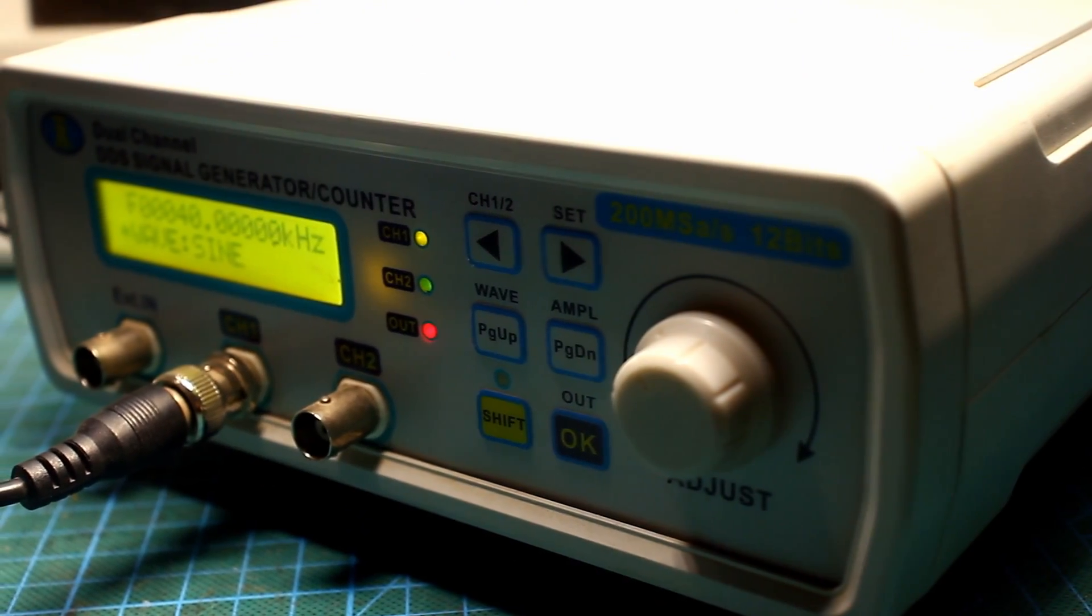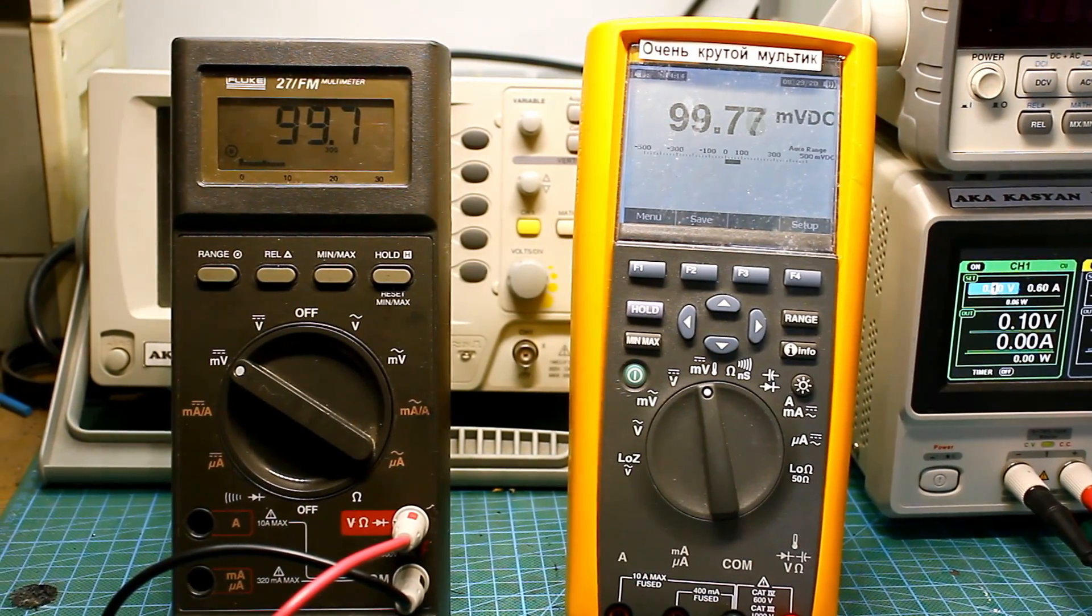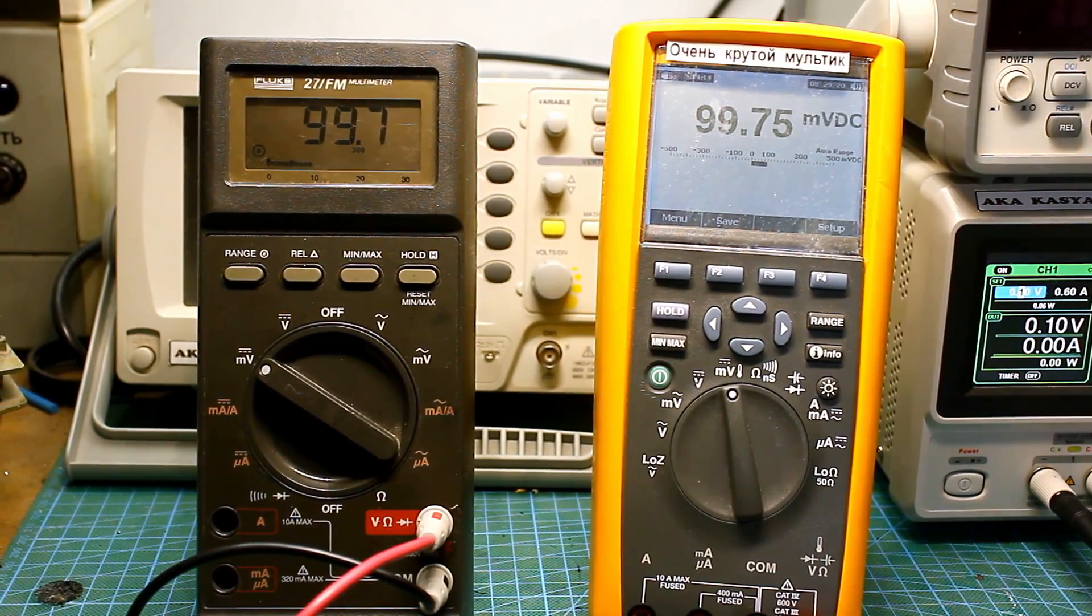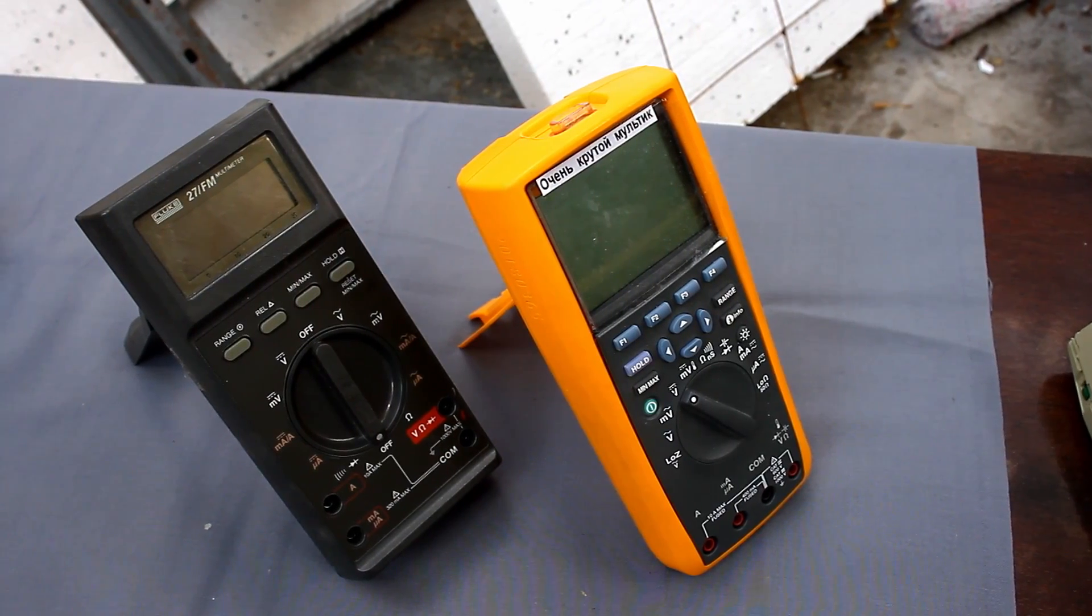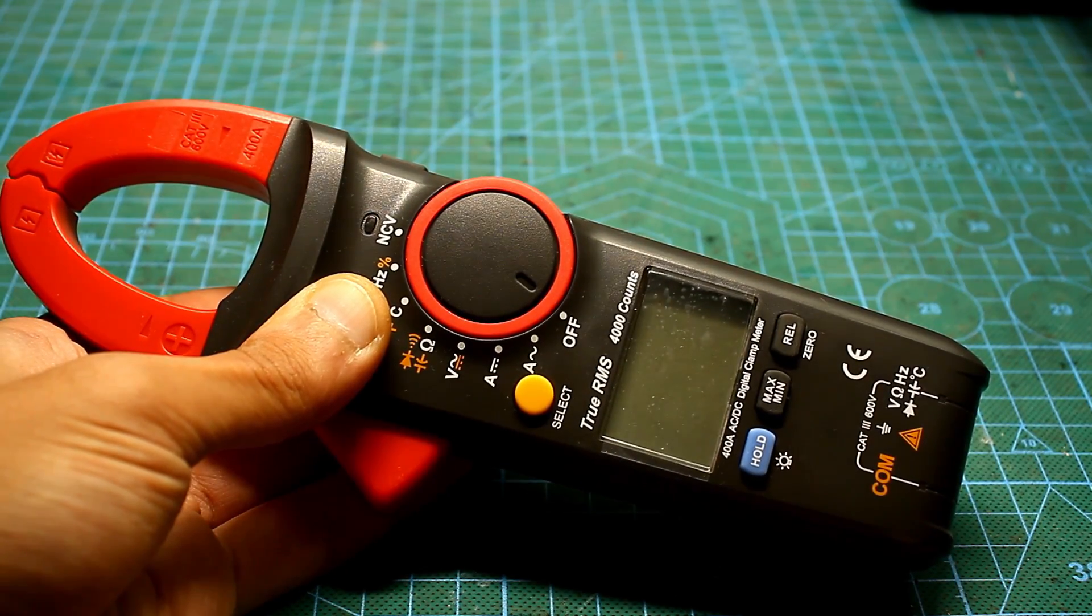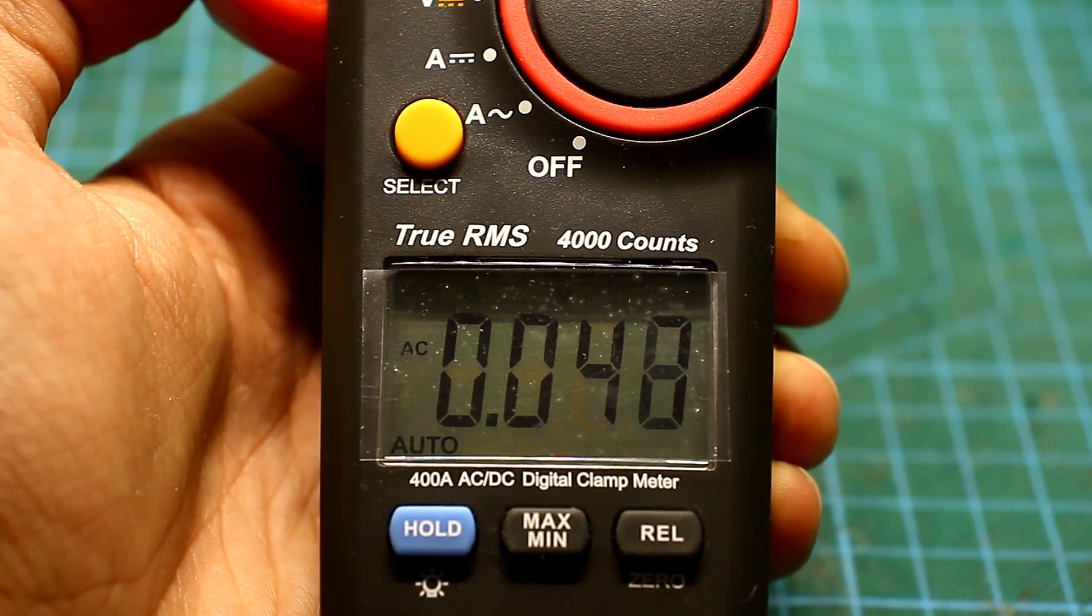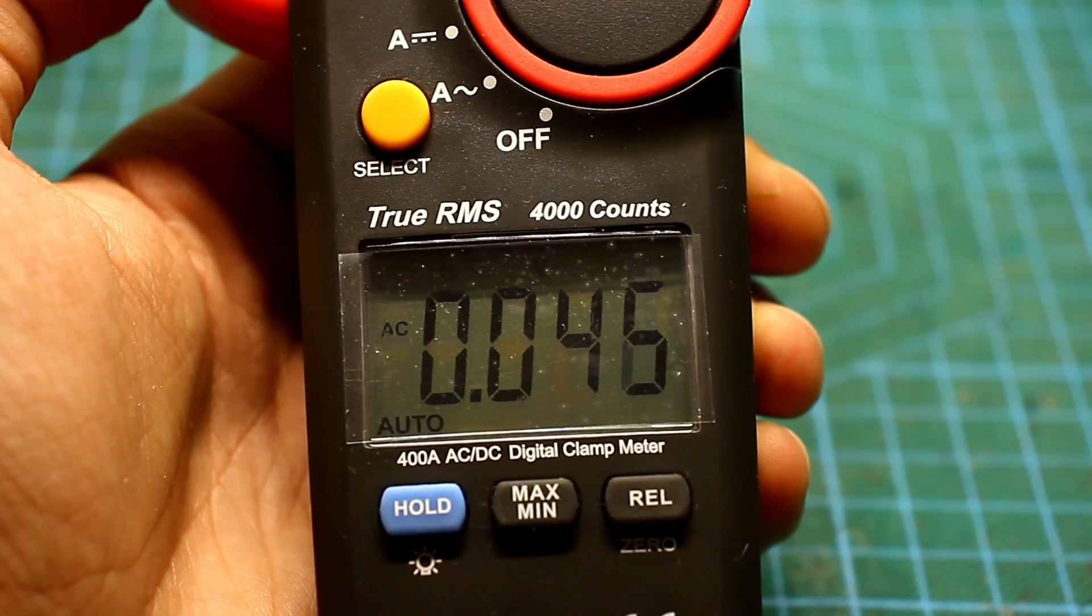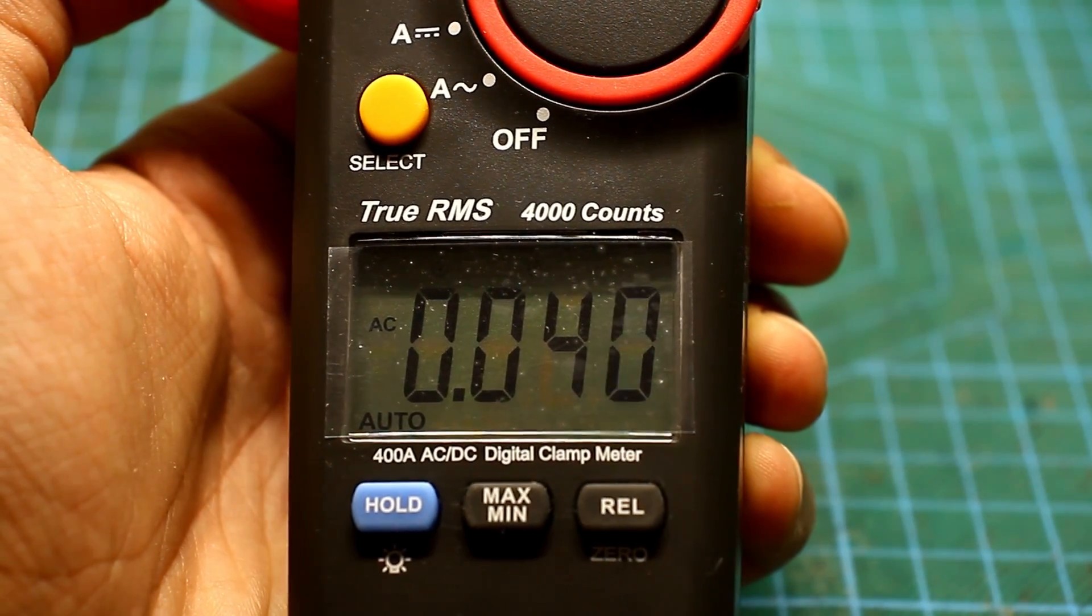Now let's check the true RMS function. I feed the sinus fluid from the signal generator and gradually increase the frequency from 100 Hz to 30 kHz. We will compare with the readings of the Fluke 289. I also connected a current clamp, which also has a true RMS function, although the option works at relatively low frequencies, about 1 to 2 kHz.